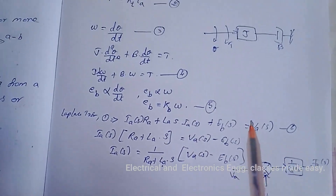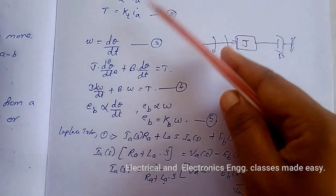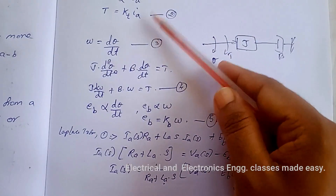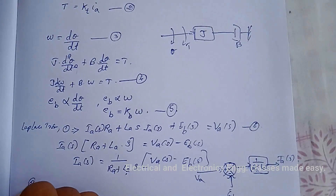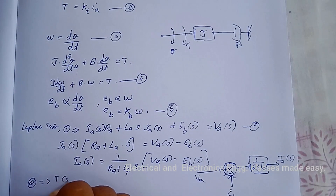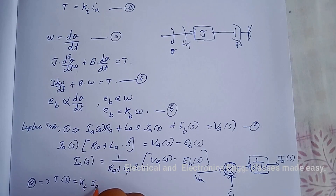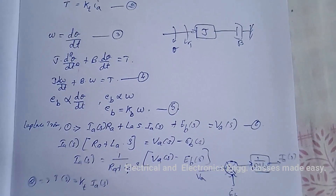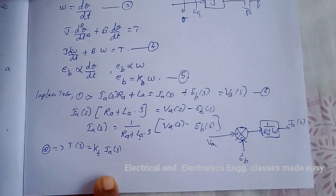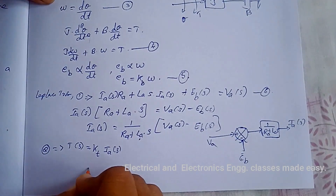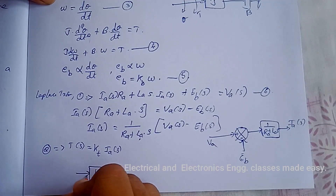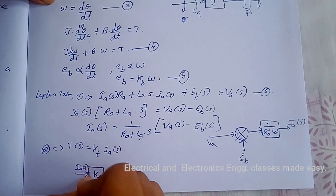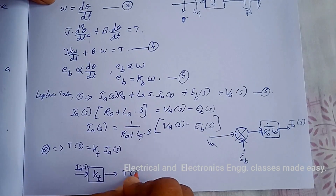Now consider the second equation: T = K_T · I_A. Taking the Laplace transform, we get T(s) = K_T · I_A(s). The block diagram has K_T as the transfer function, with input I_A(s) and output T(s).